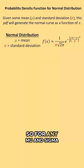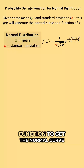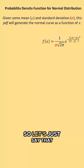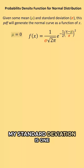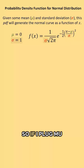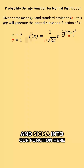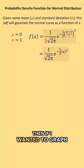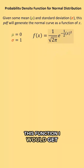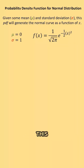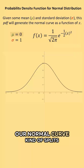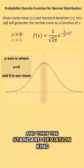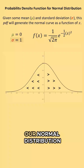For any mu and sigma, I can plug them into this function to get the normal curve for that given normal distribution. Let's say the mean is zero and the standard deviation is one. Plugging mu and sigma into the function gives us this, and if I graph this function I get a graph that looks something like this. Since our mean is zero, the normal curve splits the y-axis, and the standard deviation defines the spread of the distribution.